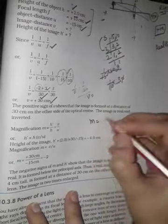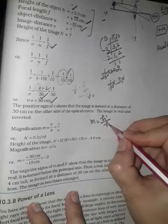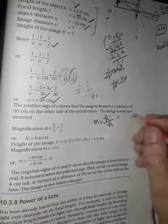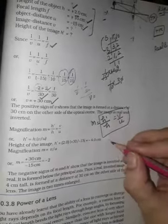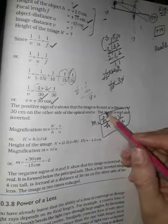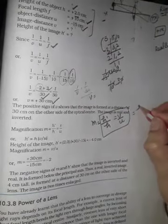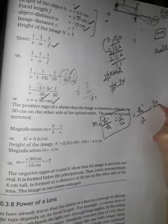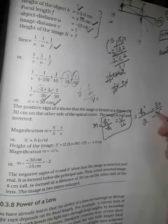Now for magnification, m equals h upon HO, which equals V upon U. Height of the image, h equals m times HO equals V upon U times HO.